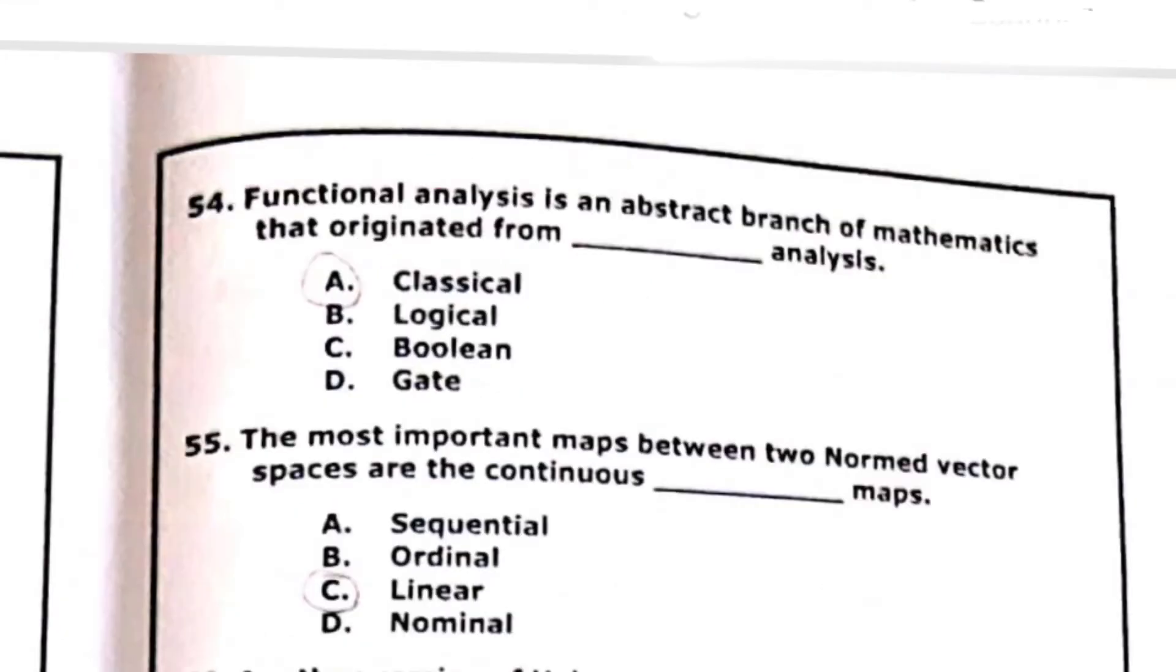Question 54: functional analysis is an abstract branch of mathematics that originated from. The answer A is correct. The most important maps between two normed vector spaces are the continuous linear map. The option C is correct one.